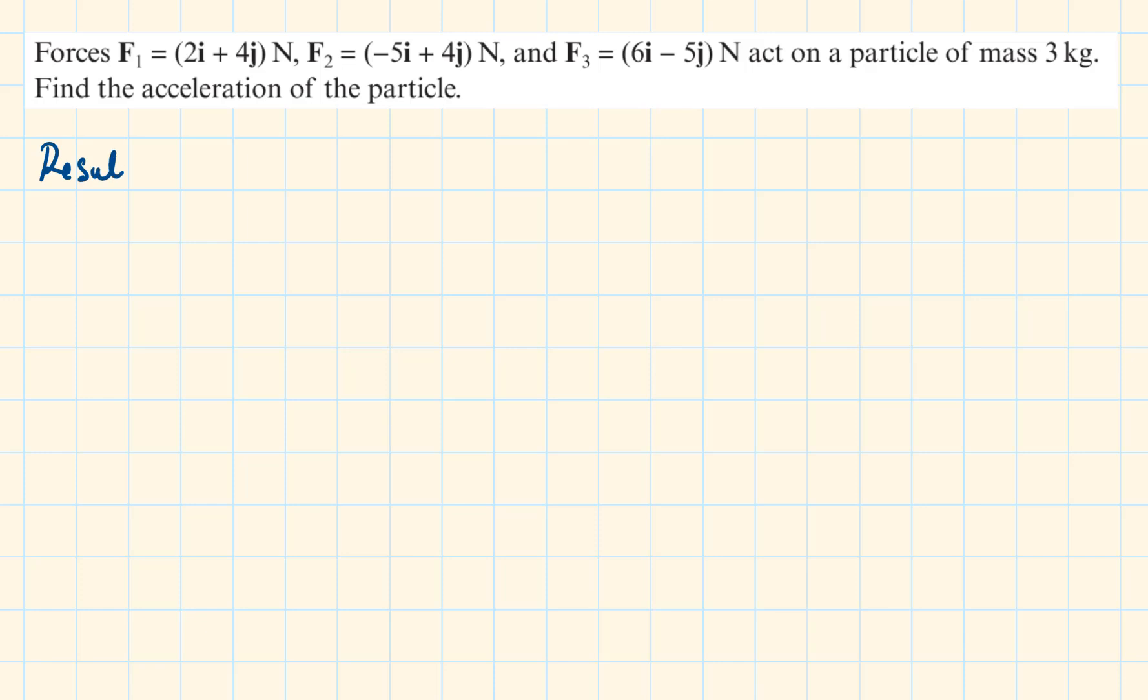We can first calculate the resultant force by adding up these vectors. Simplifying will be 3i plus 3j. Then, writing out our formula, F equals MA,